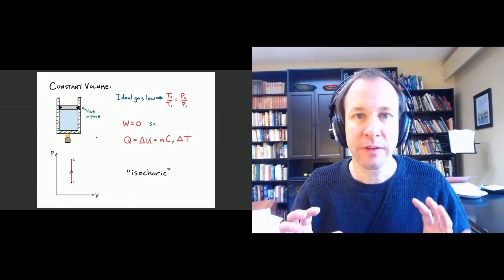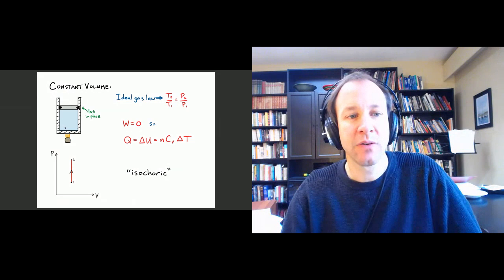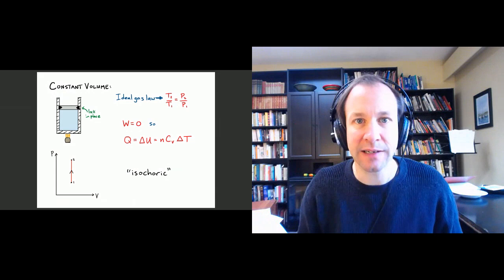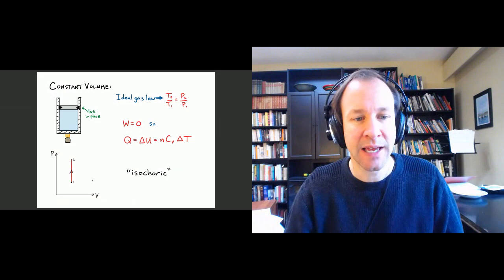The review starts with constant volume. If we have a gas in a cylinder — maybe there's a piston but we're holding it in place, or we just have a rigid container like the ideal gas thermometers we were talking about — we can heat up the gas, the pressure can increase, and the temperature can increase. On a PV diagram, this looks like a vertical line where the volume is remaining constant.